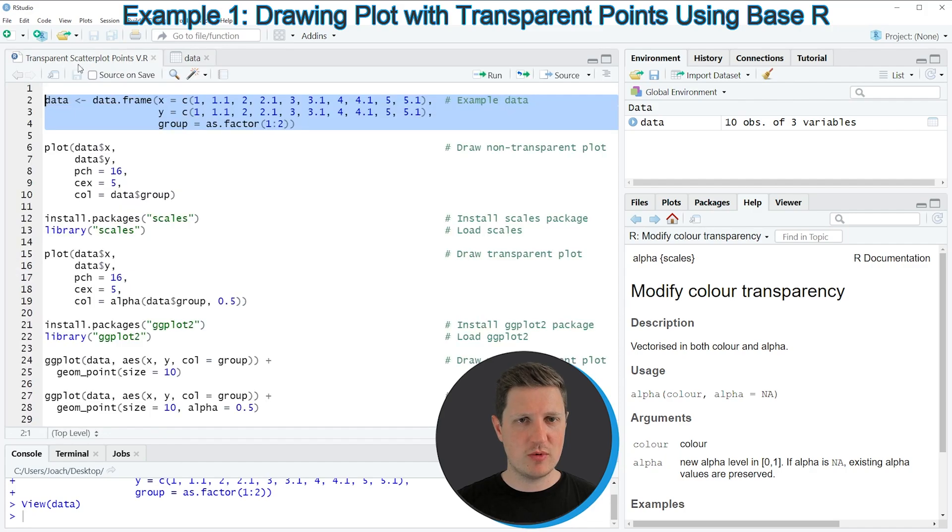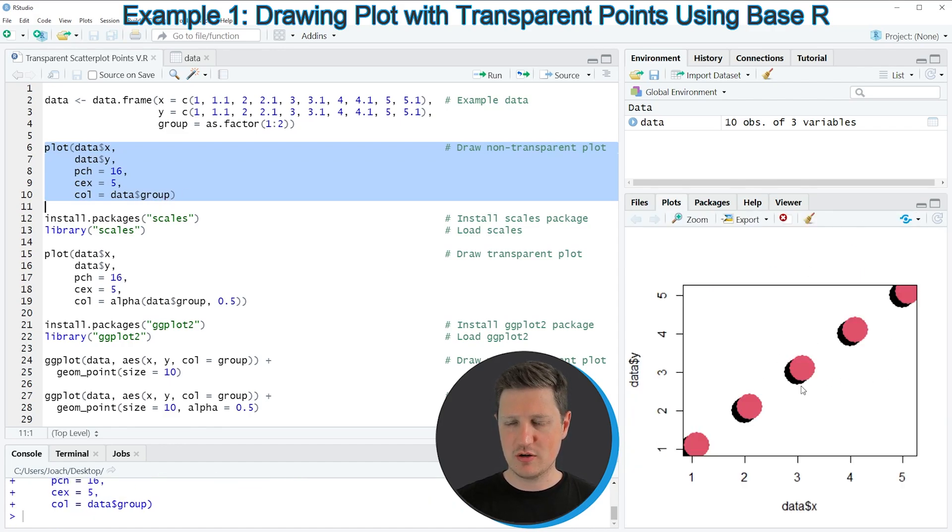So let's assume that we want to draw these data with the basic installation of the R programming language. Then we can apply the plot function, as you can see in lines 6 to 10 of the code. So if you run these lines of code, you can see at the bottom right of RStudio that we have created a new scatterplot.